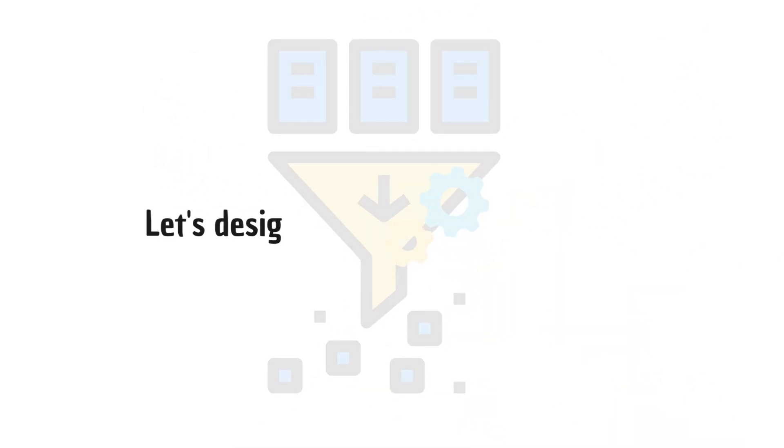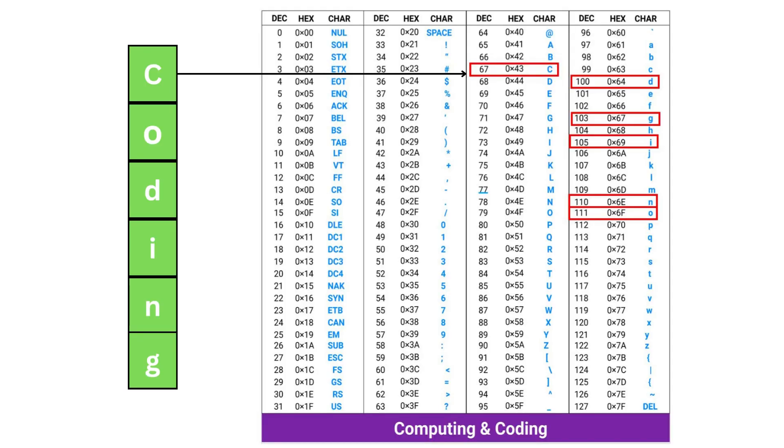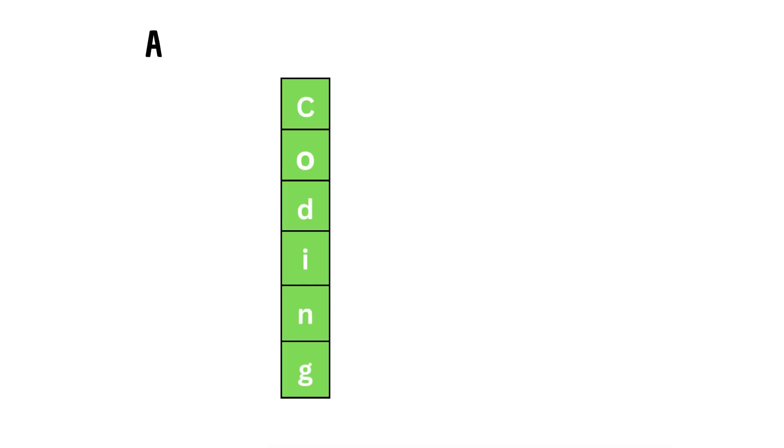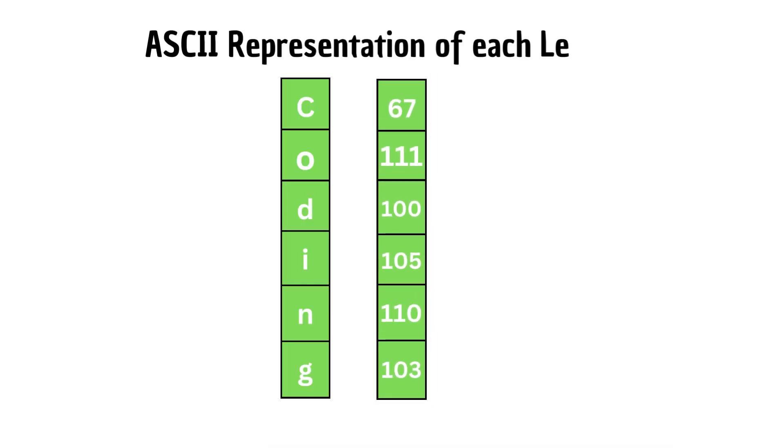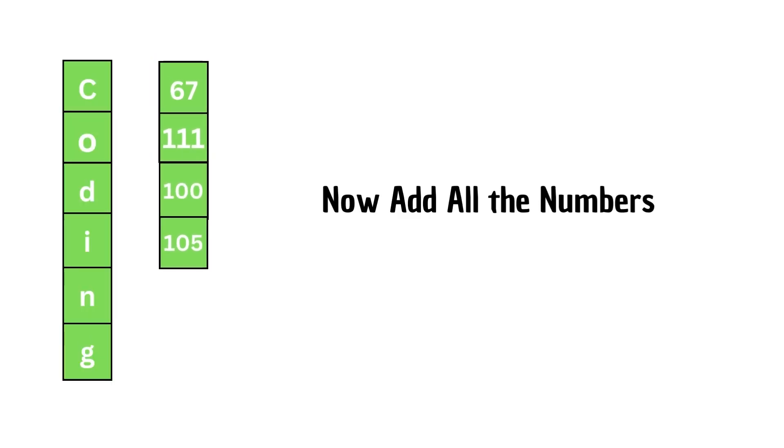Let's design a simple hash function. Our hash function will take a string as input, iterate over each character in the string, and add all the ASCII values of the characters in the string. Once we add all ASCII values, we end up with the sum of numbers which will be our hash value for our string.